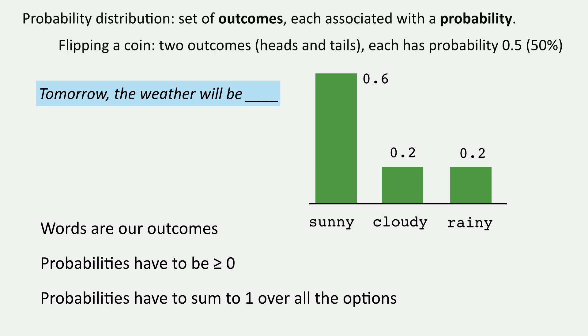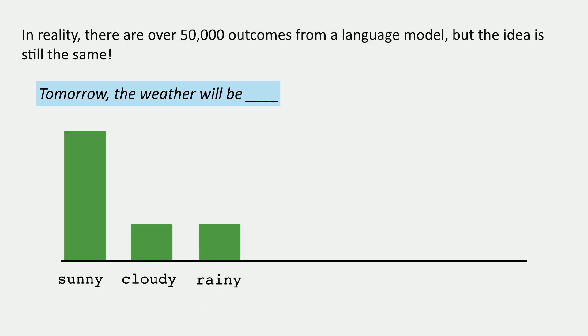Now this was a simplified setting, but language models do exactly the same thing with many, many more outcomes. In reality we have a much larger vocabulary. We might have stormy as an option, and then all the other words that can come next as well, like 'uh' or 'the.'